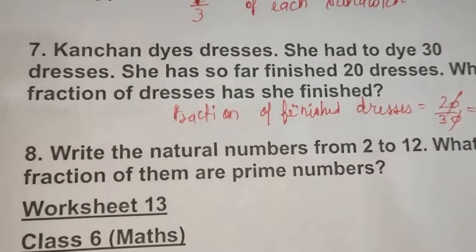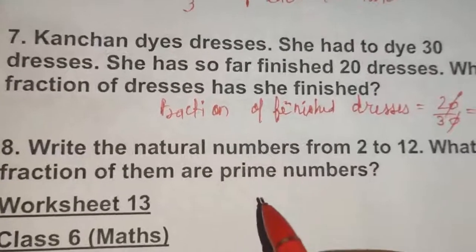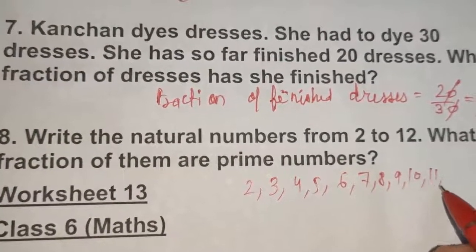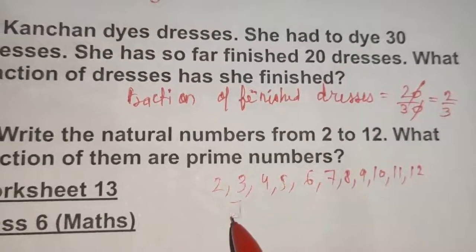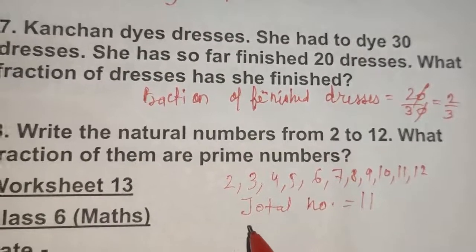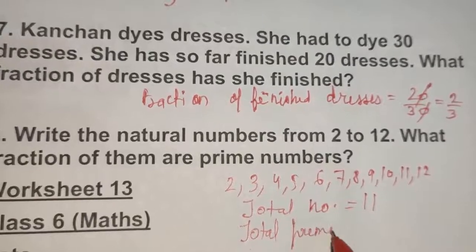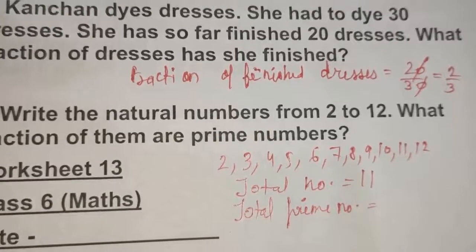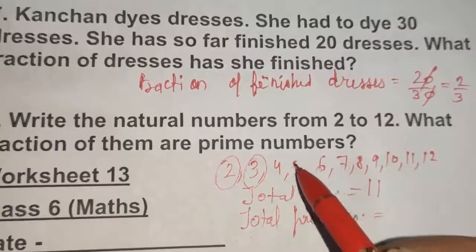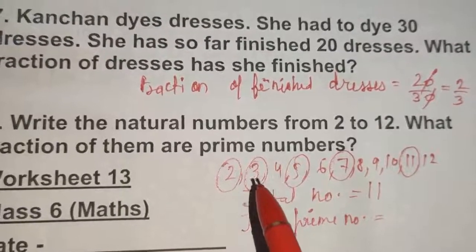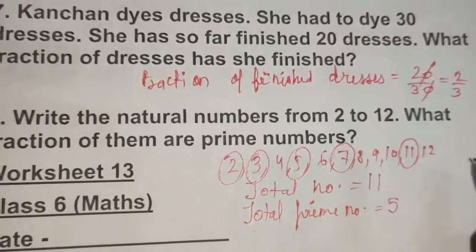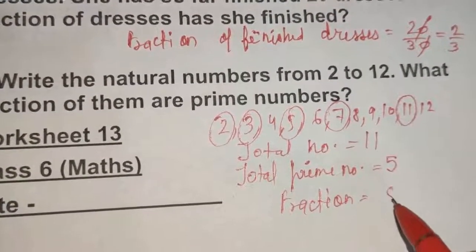Question number 8: write the natural numbers from 2 to 12 — that gives us 2, 3, 4, 5, 6, 7, 8, 9, 10, 11, 12 — a total of 11 numbers. The prime numbers among these are 2, 3, 5, 7, and 11 — that's 5 prime numbers. So the fraction of prime numbers is 5/11.